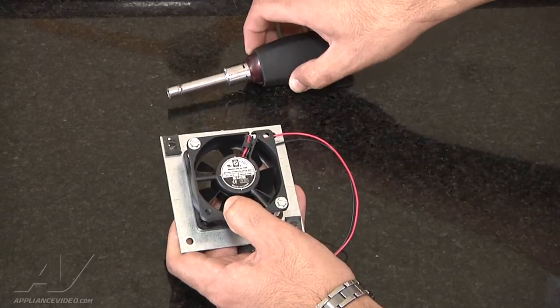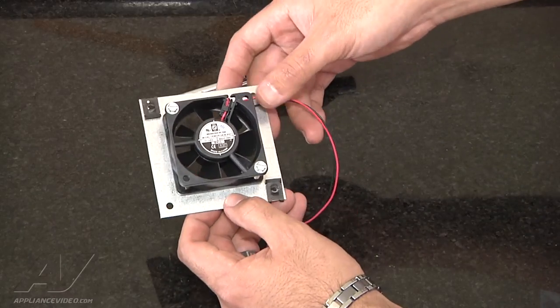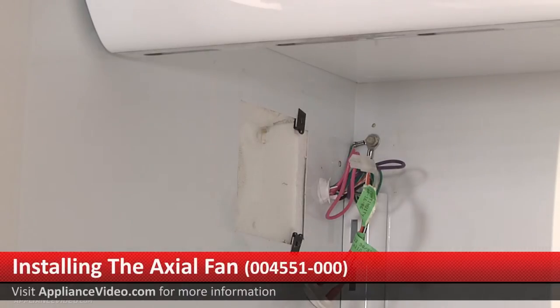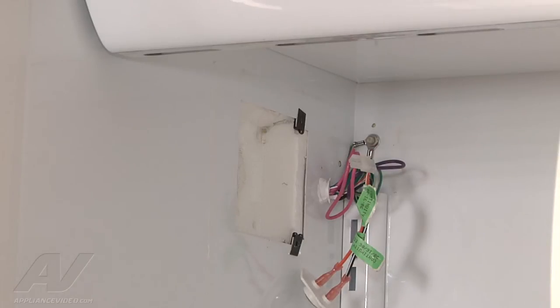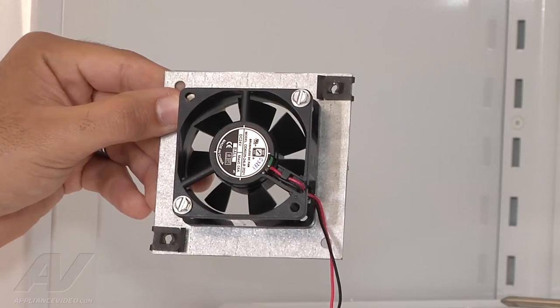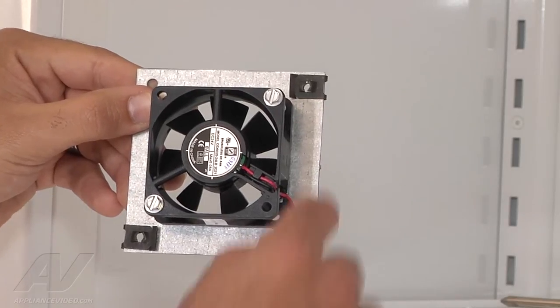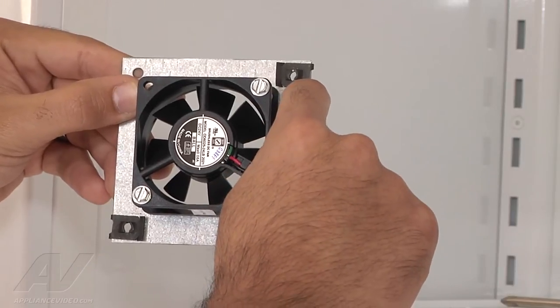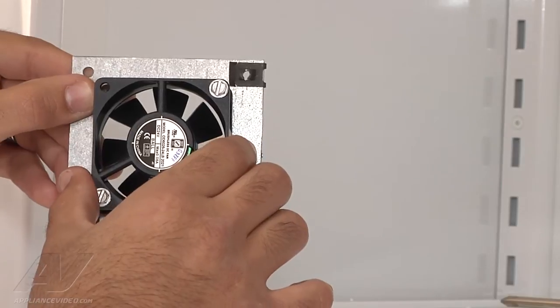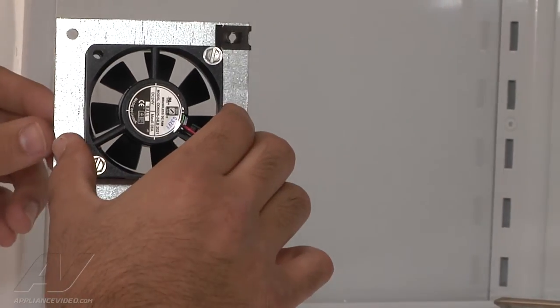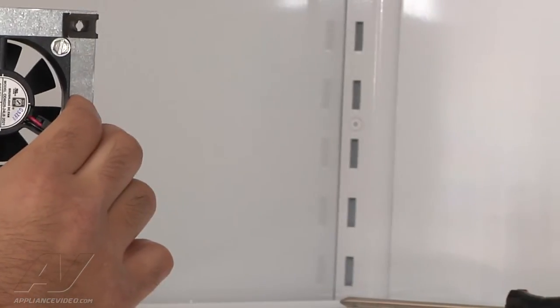Once the screws are fastened, we are ready to reinstall the bracket. Reinstall the bracket assembly with the new fan motor into the original position. There are two threaded screw clips on the upper right-hand corner and lower left-hand corner. Make sure they're in that position to line up with the screws coming from the freezer section.